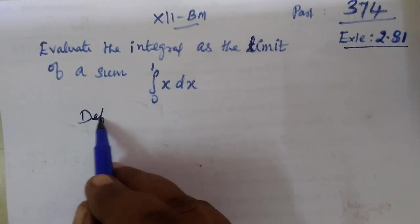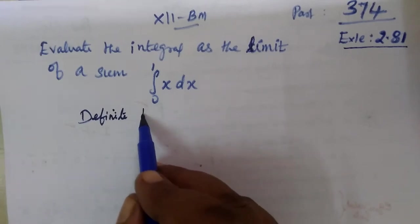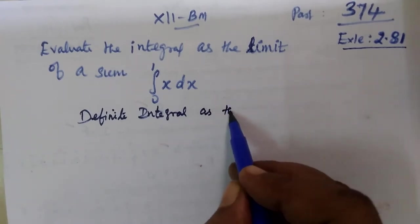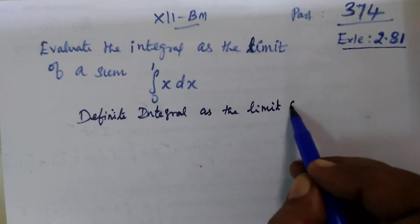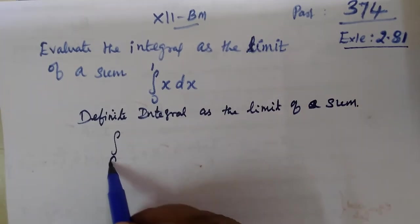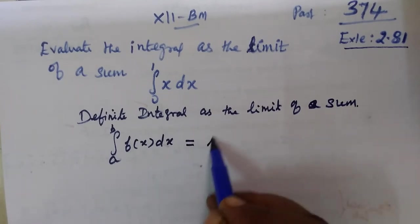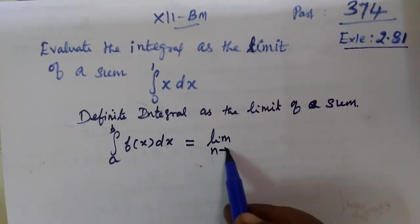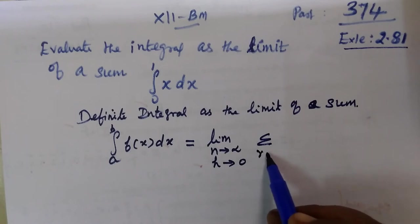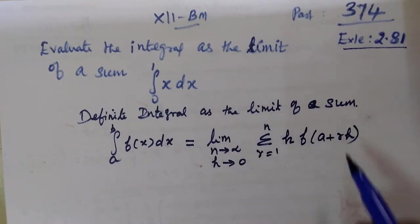The question is: definite integral as the limit of a sum. The formula is: integral from a to b of f(x) dx equals limit as n tends to infinity and h tends to 0, of sigma r equal to 1 to n, of h times f(a + rh).